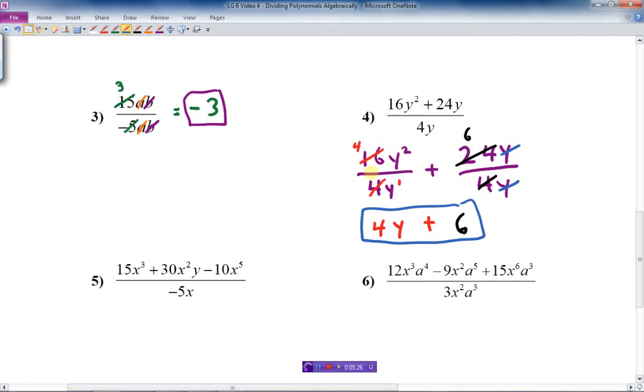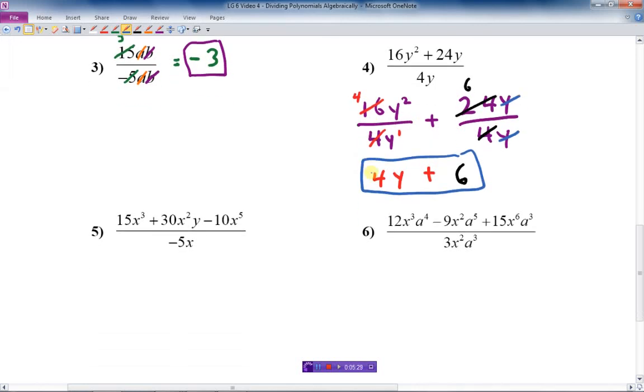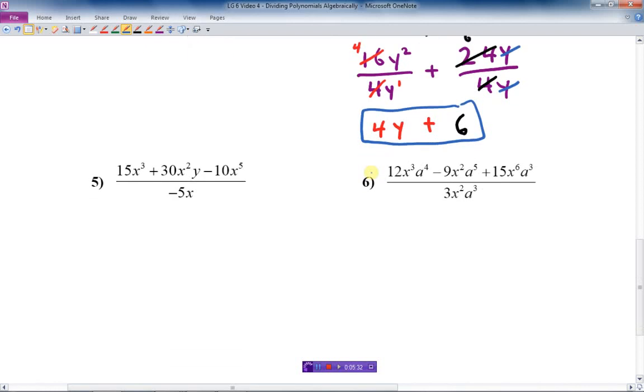Let's go on to the next one, a little bit more challenging. The main thing is they get longer. I'm going to take this next question and put the first term of the numerator, which is 15x cubed, over negative 5x, plus 30x squared y over negative 5x, then comes a minus sign on top—10x to the fifth over negative 5x.